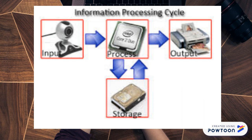As mentioned previously, storage doesn't necessarily mean you're going to save something. It can mean the processor or the computer chip getting information from somewhere and giving it to you as output. This is why the processor goes to and from storage — it's also the computer getting stored information and then presenting it. That's our information processing cycle.